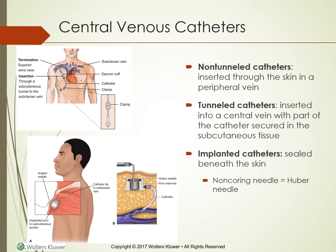Central venous catheters: there are non-tunnel catheters inserted through the skin in a peripheral vein — that is normally what you see in hospitals. In the units you will see more of the tunnel catheters, inserted into a central vein with part of the catheter secured in the subcutaneous tissue. You can see that in the picture to the left, where the insertion is through a subcutaneous tunnel to the subclavian vein and the termination is in the superior vena cava.